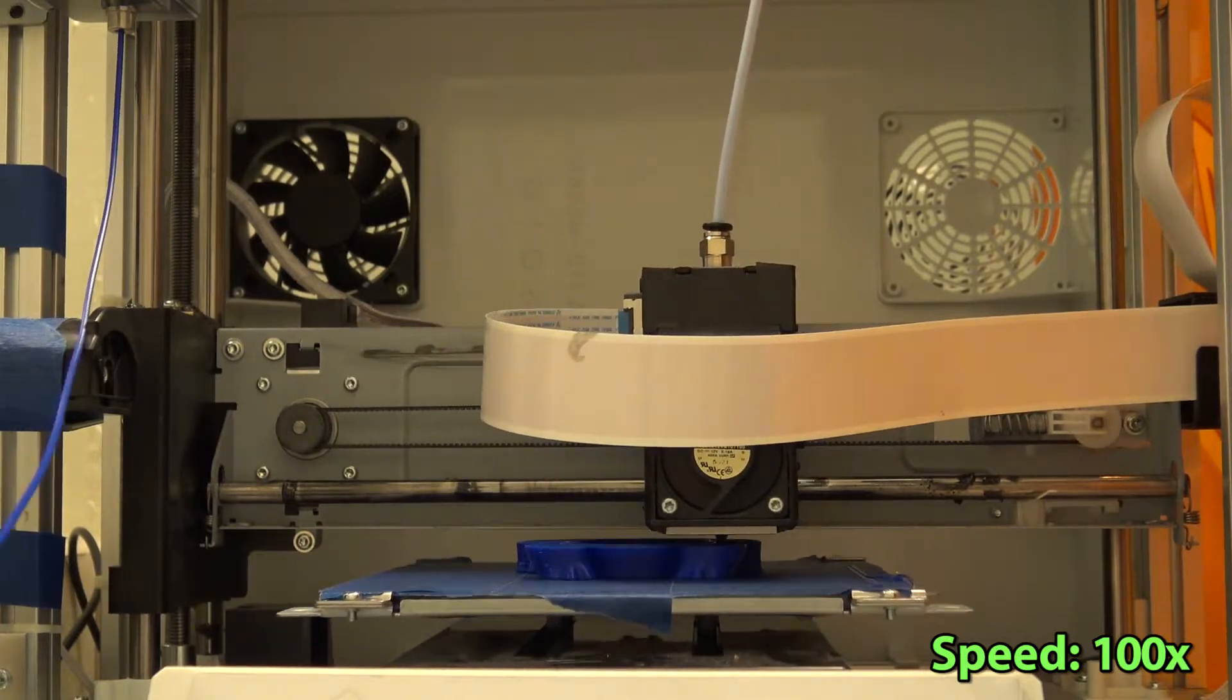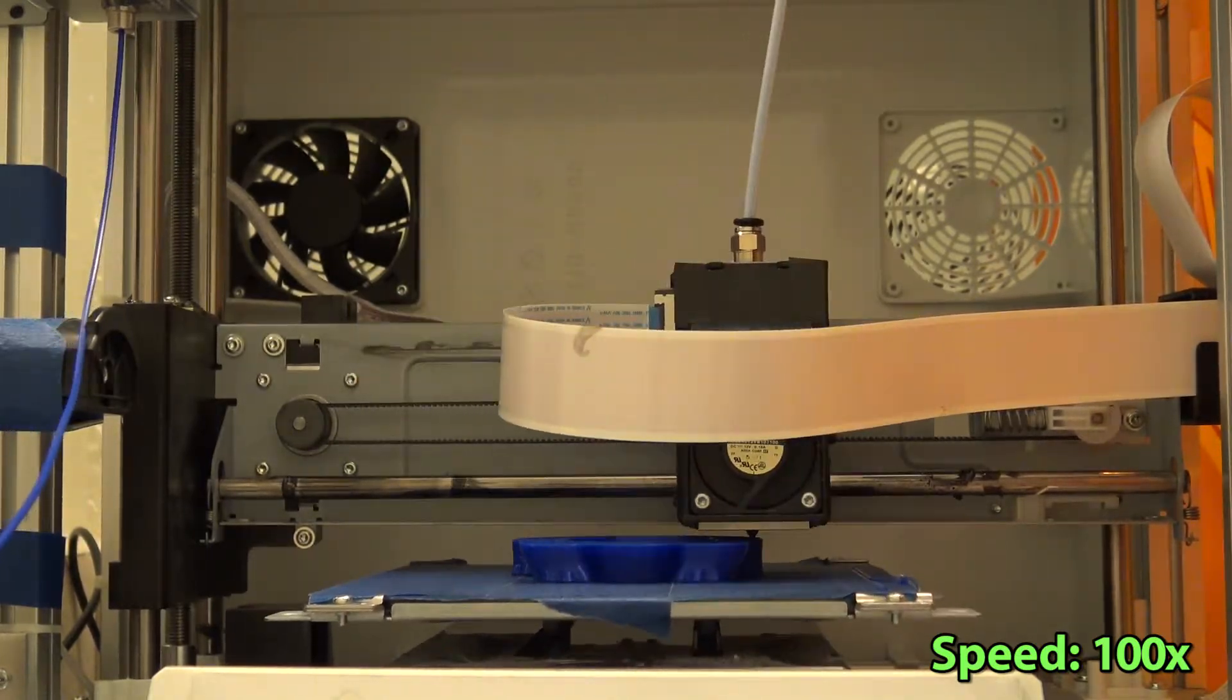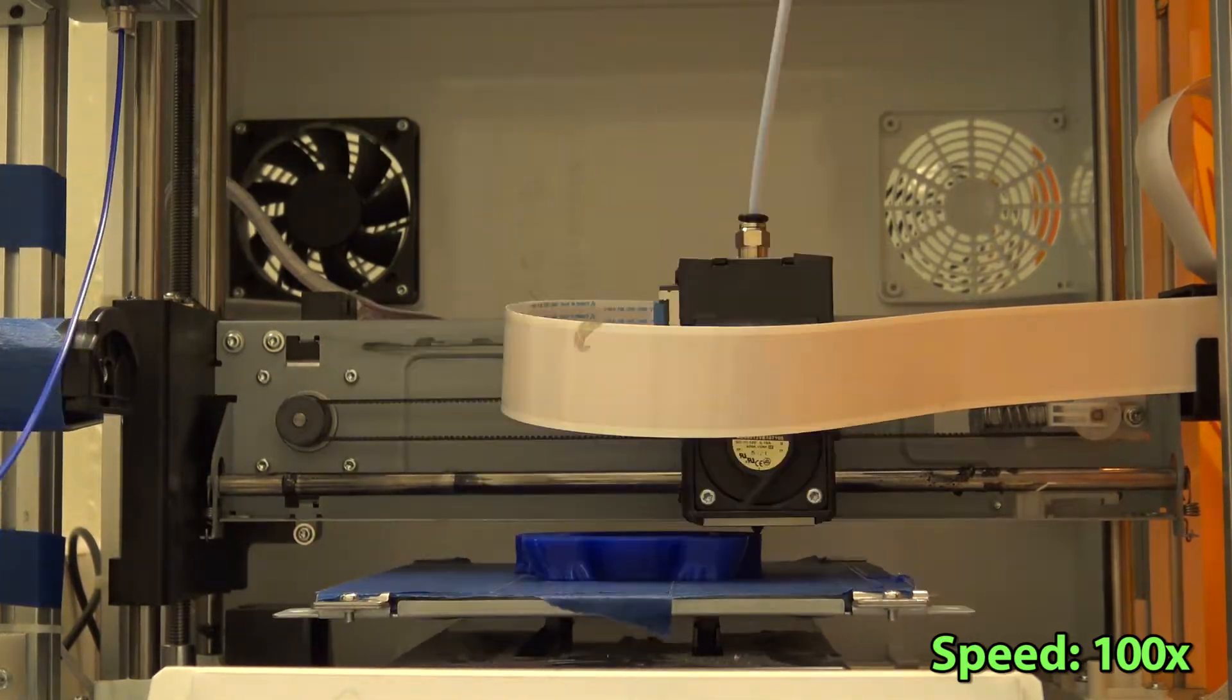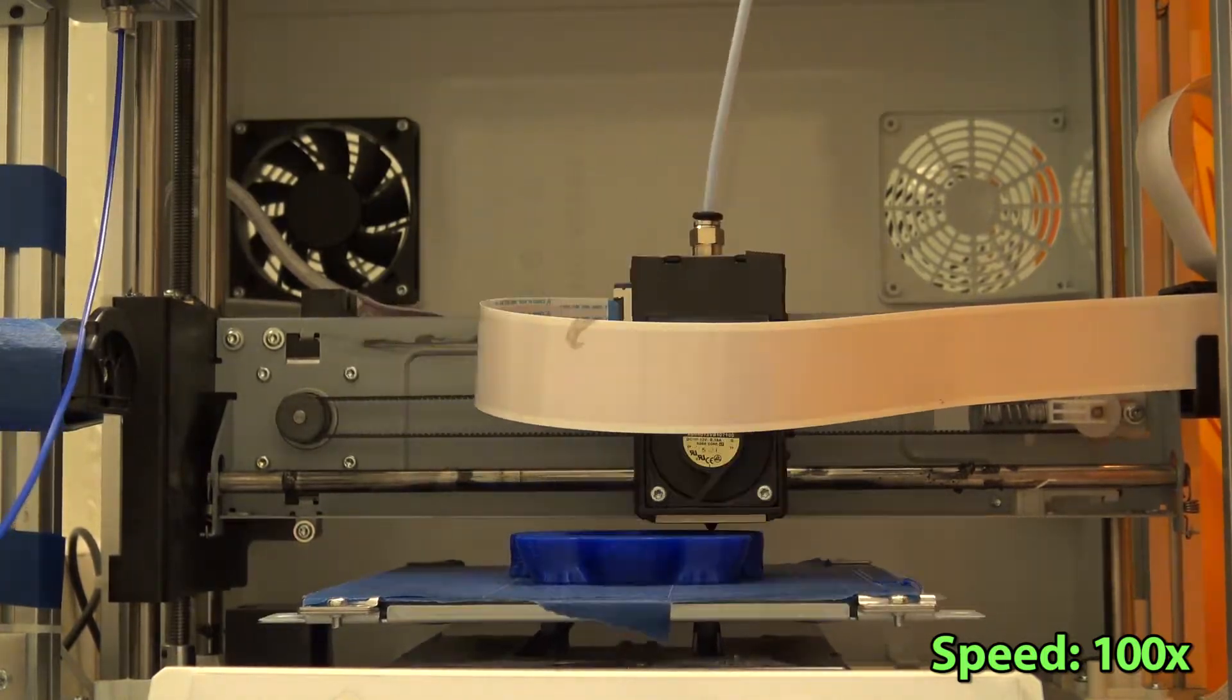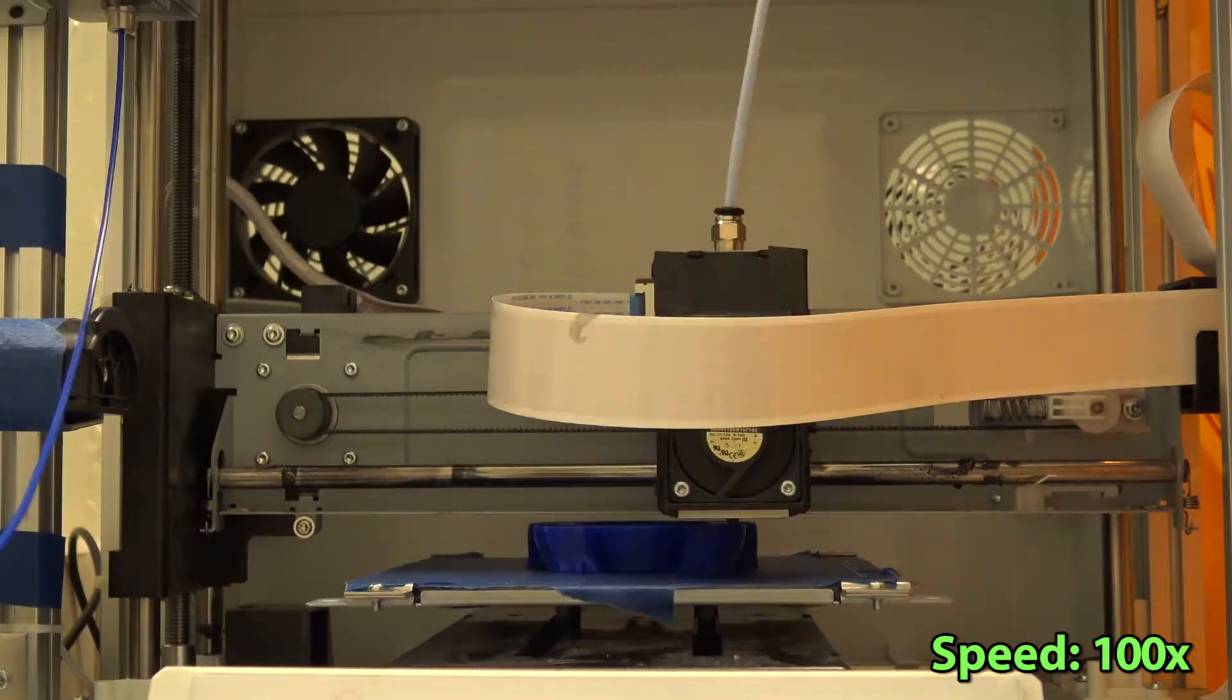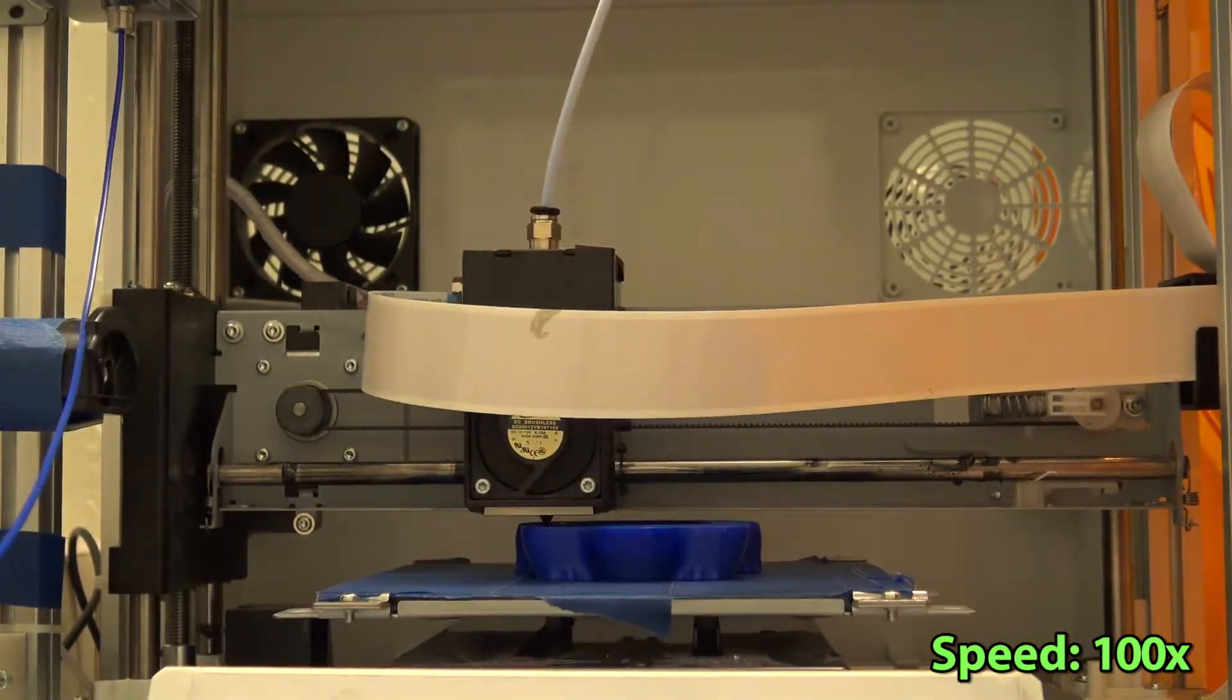Decreasing the printing speed can be used for solving certain problems that happen, for example when you see that some filament strings are generated between pieces of the 3D model where they shouldn't be. This means that the next layer of plastic is being deposited when the previous layer is not very well solidified yet. Another problem that can happen when the printing speed is too high is that the model starts to get skewed or you start to see some deformations in the 3D model. So setting a slower printing speed can solve these problems.